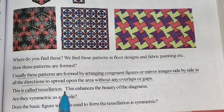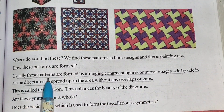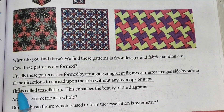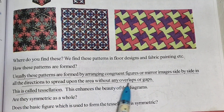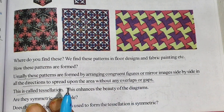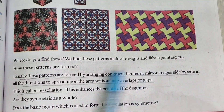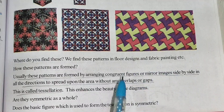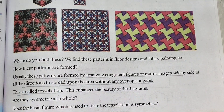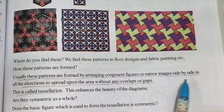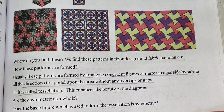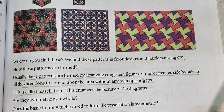Next is tessellation. These patterns are formed by arranging congruent figures or mirror images side by side in all directions to cover an area without any overlaps and gaps. This is called a tessellation. The best example is floor tile arrangement in our house — we arrange figures without any overlapping or gaps.